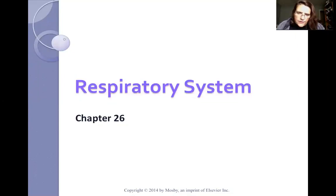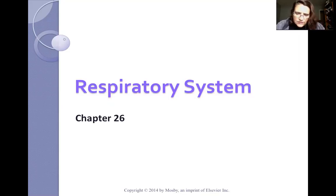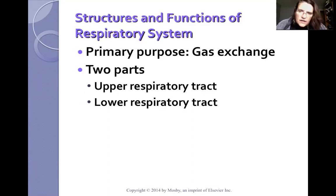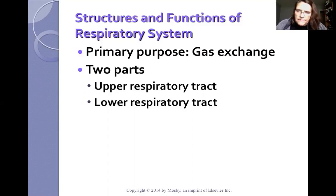This is a recorded lecture for Chapter 26, the Respiratory System, covering 30 slides. This lecture was recorded due to a missed class related to the presidential visit on Wednesday. The primary structures of the respiratory system come in two parts: the upper respiratory tract and the lower respiratory tract. The primary purpose is gas exchange — an exchange of oxygen and carbon dioxide at the level of the lungs.